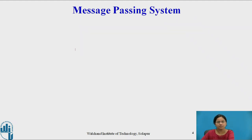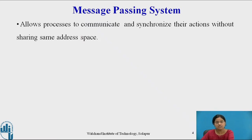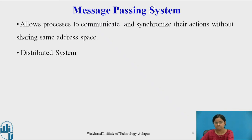From the two fundamental models, we are going to learn about message passing system today. It allows processes to communicate and synchronize their actions without sharing the same address space. Processes do not share the same address space, but they communicate with each other just by exchanging information. This message passing system is basically used in distributed systems.